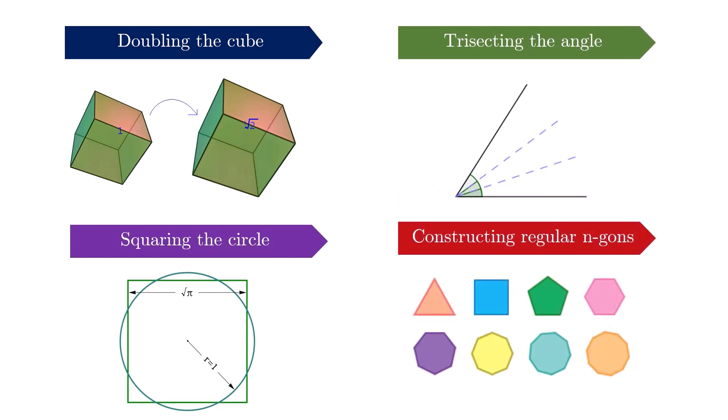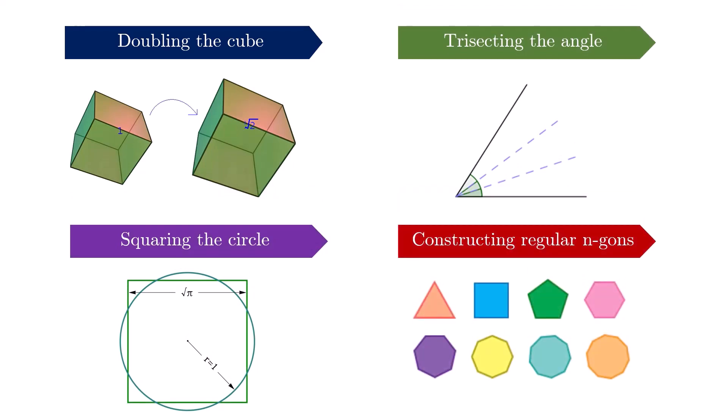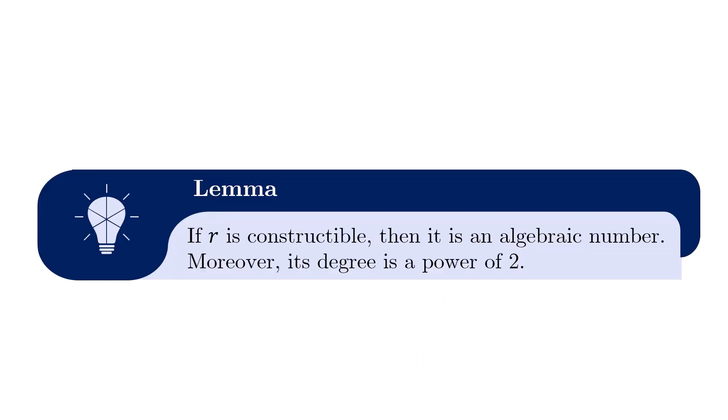And now we are ready to look at our four famous problems in Euclidean geometry, which had defied centuries of attack since Euclid's time. For these problems, we are going to need a lemma or a little mathematical proposition. If r is a constructible number, then it turns out that it must be an algebraic number and its degree is a power of 2.